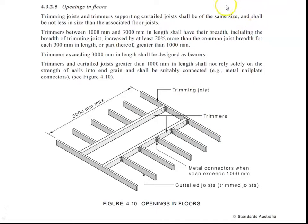And that comes out of the AS1684. Here's a little excerpt out of the 1684 that we're going to use for sizing these trimmers and the trimming joists. So in here this is the line we're looking at: Trimmers between one and three metres in length shall have their breadth, which is their thickness, including the breadth of the trimming joists, increased by at least 20% for every 300mm greater than the one metre. So if that sounds a little bit confusing, I'm going to go through that right now and explain what that means.